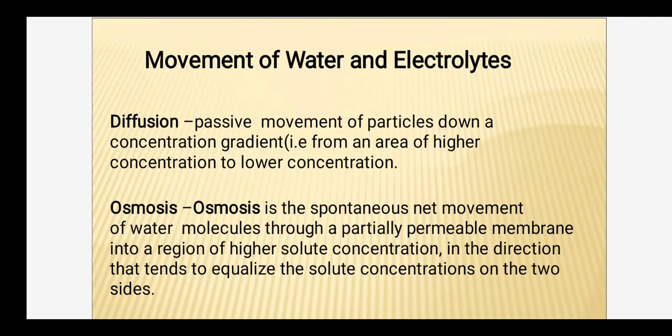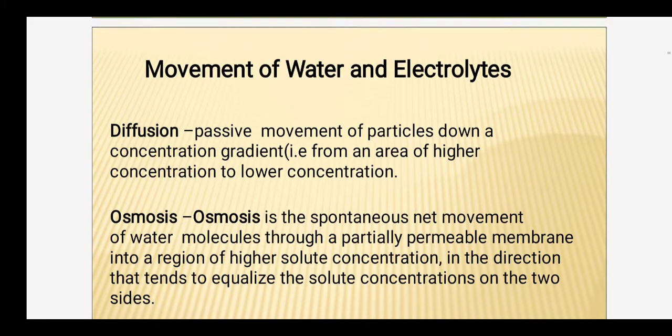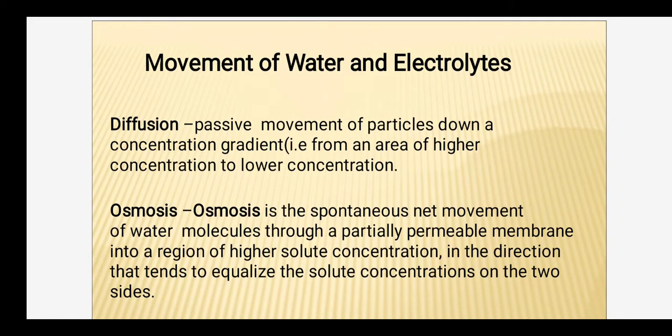Now, how do water and electrolytes move across the body — from cells, outside the cells, into the cells? These movements occur by the following methods. First is diffusion — passive movement of particles down the concentration gradient, that means from higher concentration to lower concentration. This is simple diffusion and no energy is required.